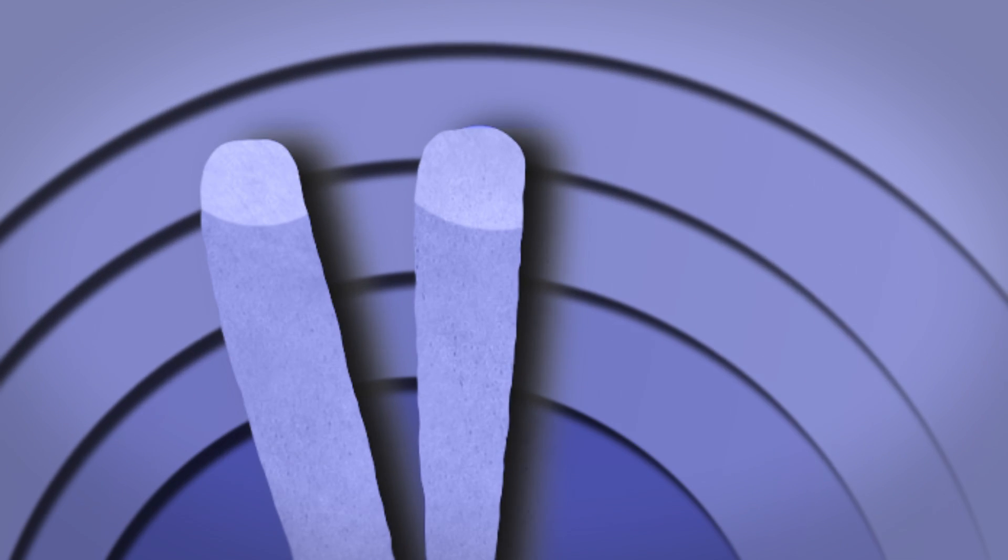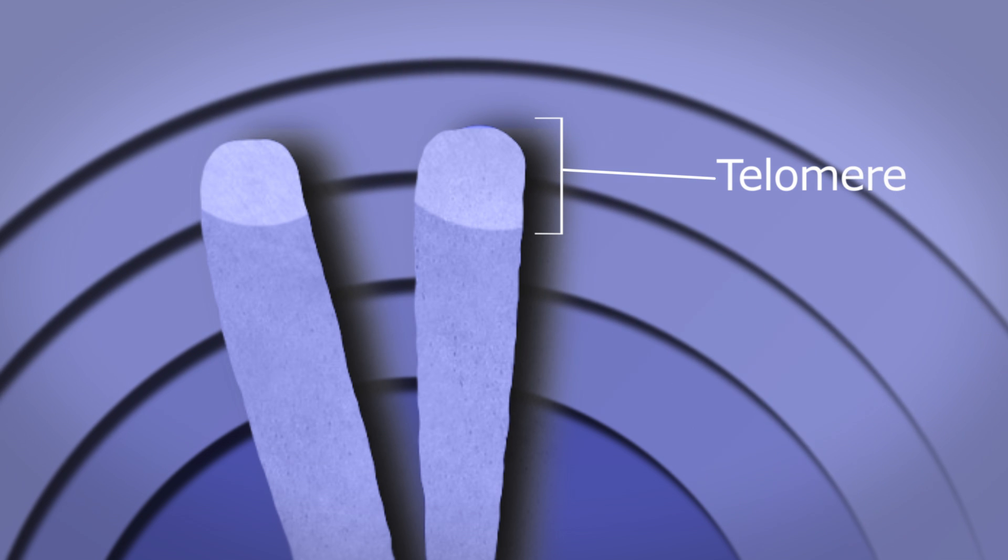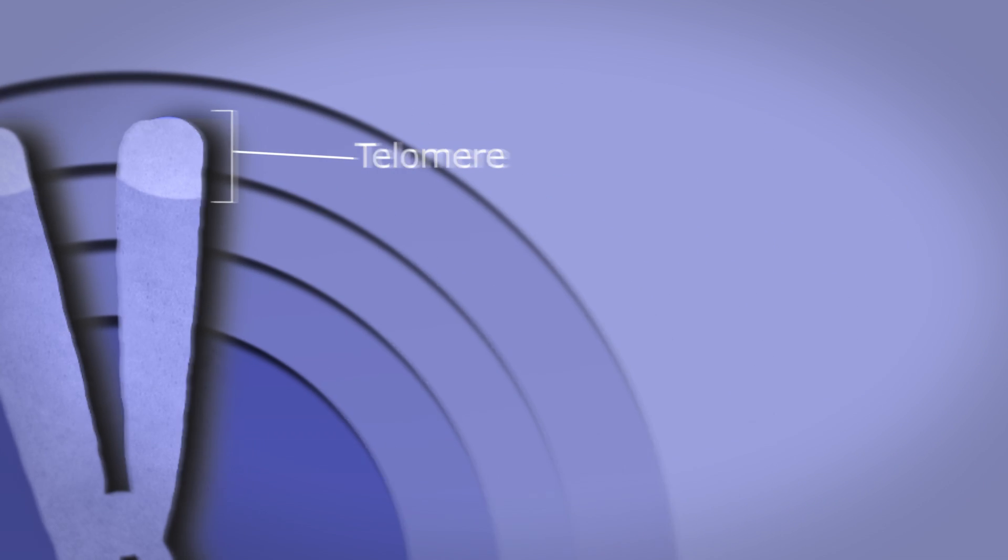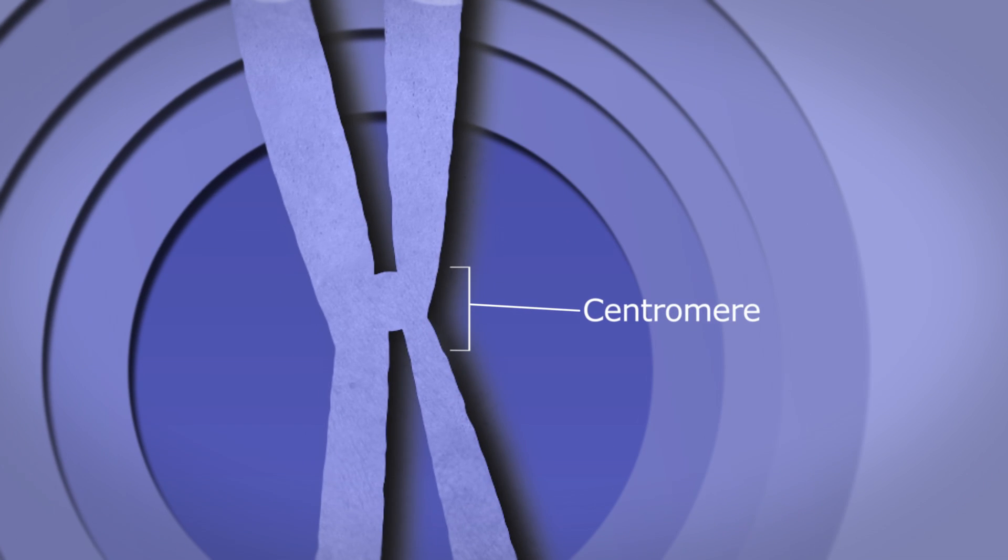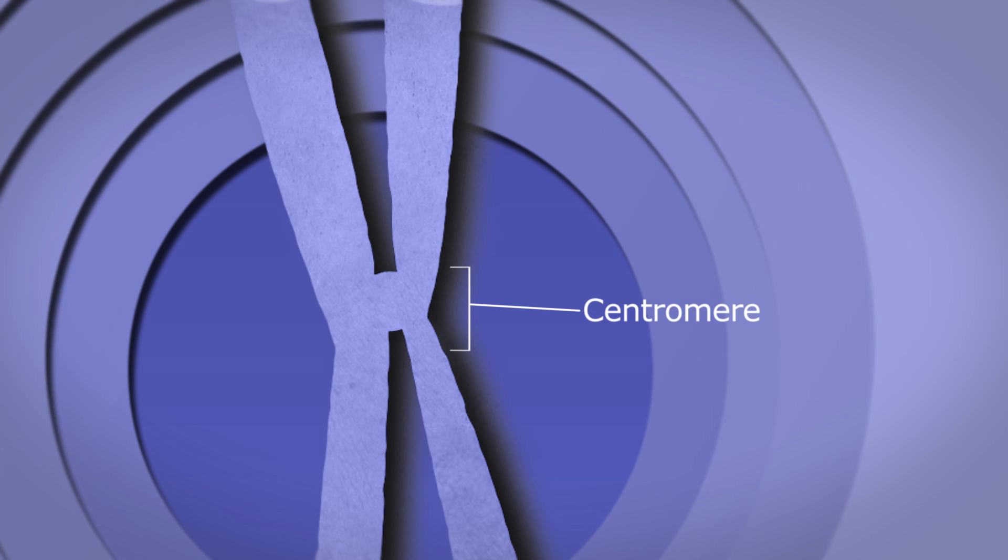The first are telomeres. Telomeres are repetitive sequences at each end of the chromosome, which act kind of like the plastic bits on the end of your shoelace that prevent it from fraying. The second feature in common is the centromere, a region in the middle of the chromosome that is used during cell division.